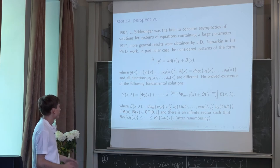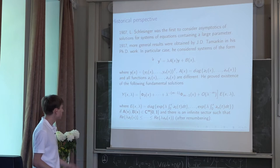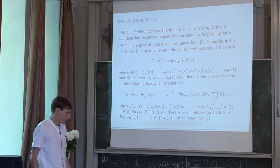Okay, some historical review. Initially, some asymptotics was obtained by Schlesinger in 1907.